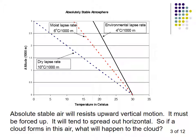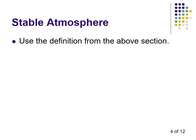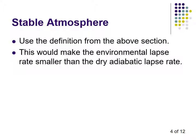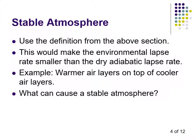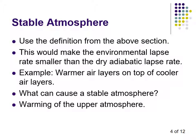A stable atmosphere would have an environmental lapse rate smaller than the dry adiabatic lapse rate. For example, warm layers of air on top of cold layers would cause a stable atmosphere, as would warming of the upper atmosphere, referred to as warm advection. In meteorology, air that moves up or down is called convection, while air moving east-west or north-south is called advection.